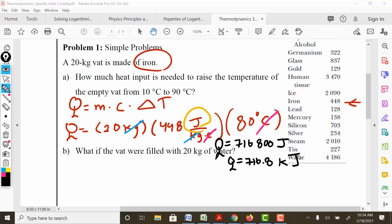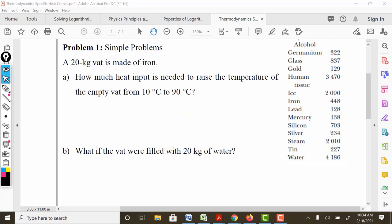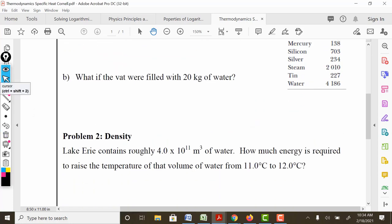Quite a bit of energy, but nothing compared to what happens when we add water into the mix. So recall, remember this number: 716,800 joules. So what if we take this vat and we add water inside of it? We add 20 kilograms of water into this vat.